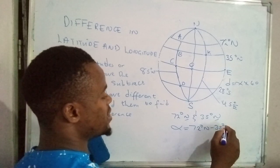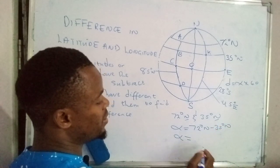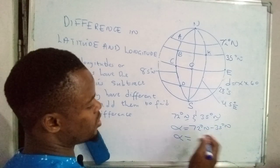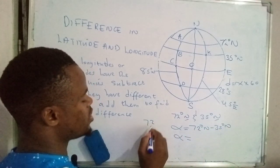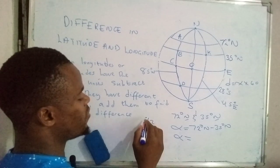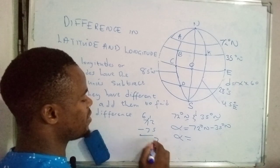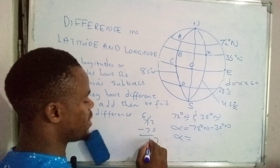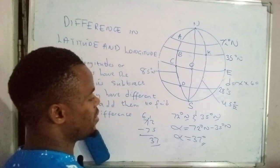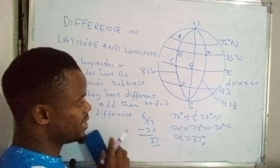So that would be 72 degrees north minus 35 degrees north. Working it out: 72 minus 35 — you get 37. So the difference between these two latitudes is 37 degrees.